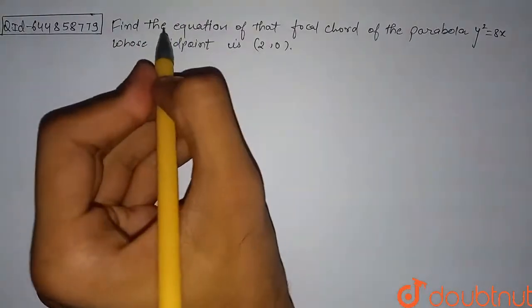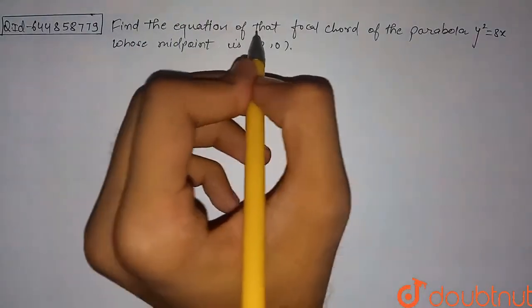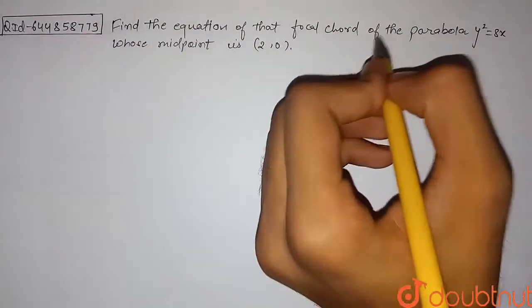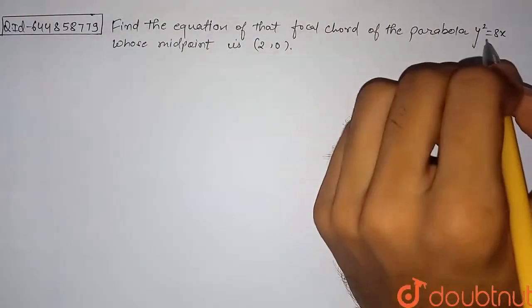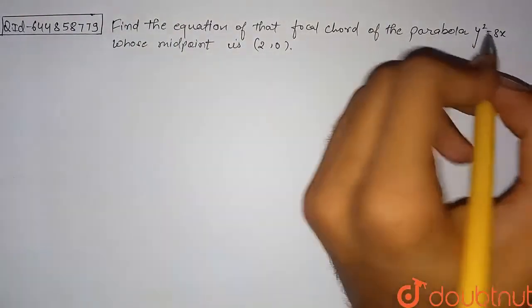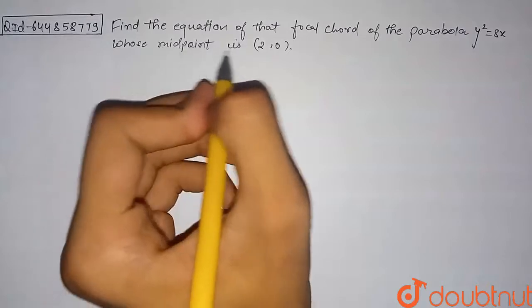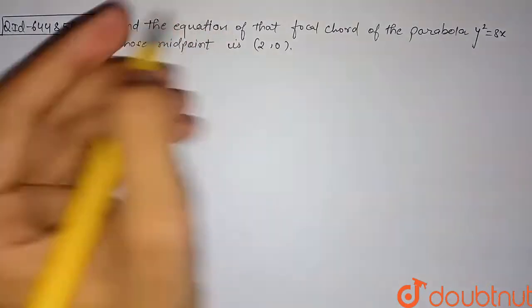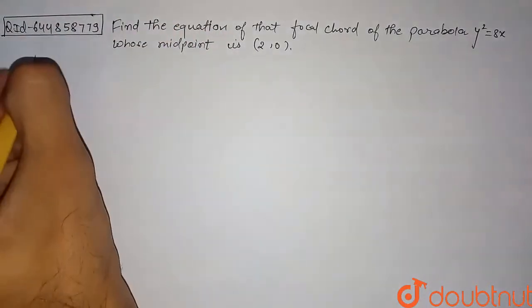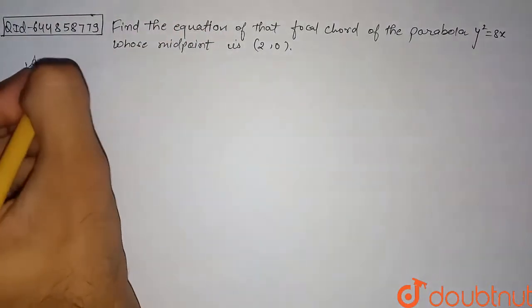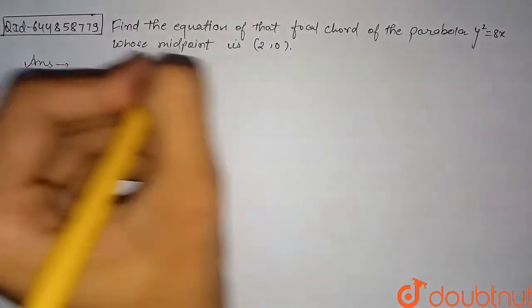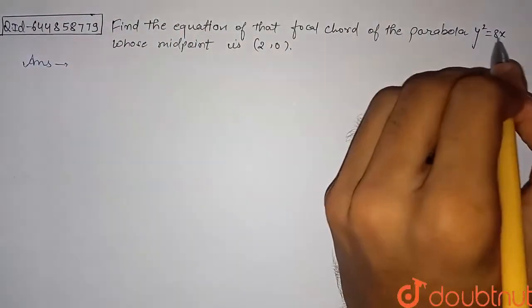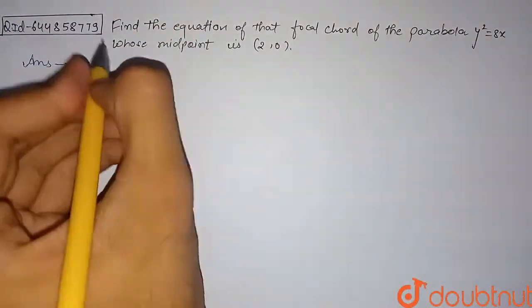Find the equation of that focal chord of the parabola y² = 8x whose midpoint is (2, 0). So let's begin with the solution of this question. First we will compare our parabola with the general equation of parabola.